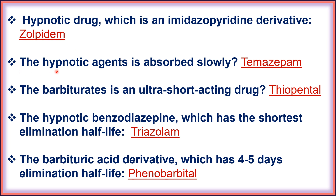The hypnotic agent that is absorbed slowly is temazepam. The barbiturate that is an ultra-short-acting drug is thiopental. The hypnotic benzodiazepine which has the shortest elimination half-life is triazolam. The barbituric acid derivative which has a 4–5 day elimination half-life is phenobarbital.